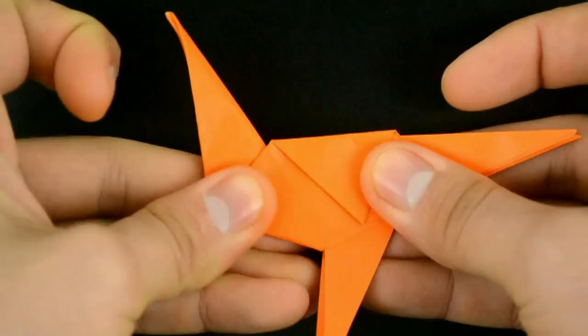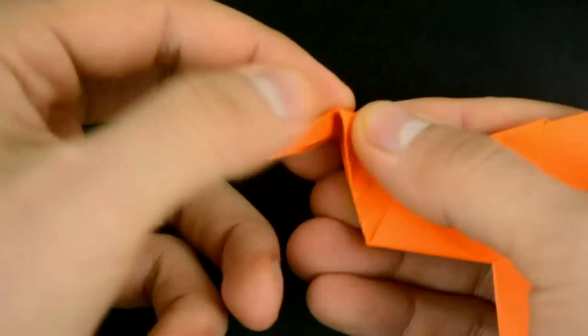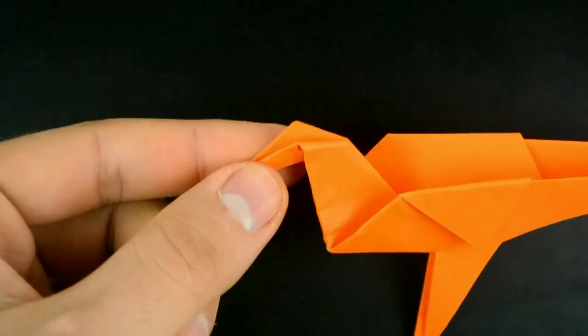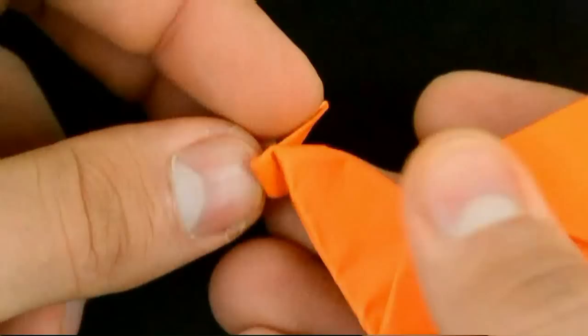Now reverse the steep again, more or less here, and reinforce. Now let's open this part and fold back, then fold forward, giving the detail of the beak.